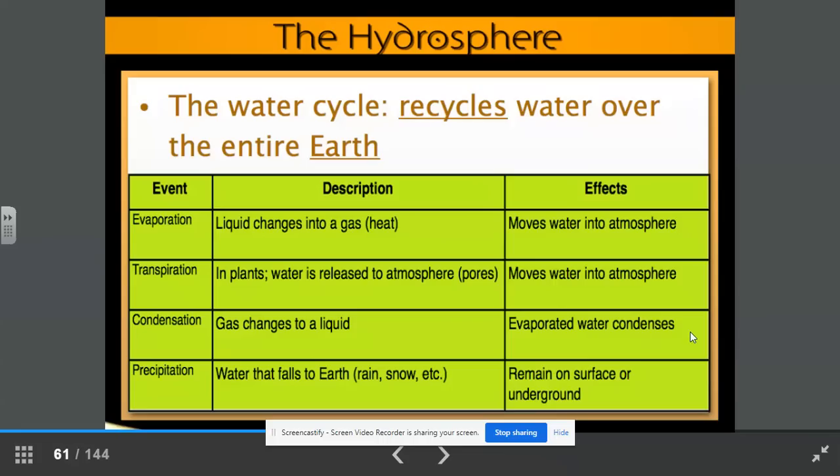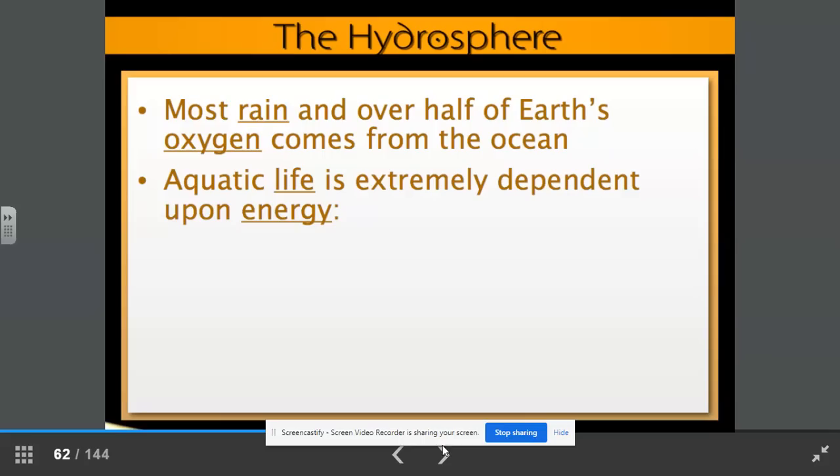Precipitation is when the water actually does fall to the earth in the form of rain, snow, sleet, hail, etc. The effects is it remains on the surface or underground. Most rain and over half of earth's oxygen comes from the ocean. Aquatic life is extremely dependent upon energy.